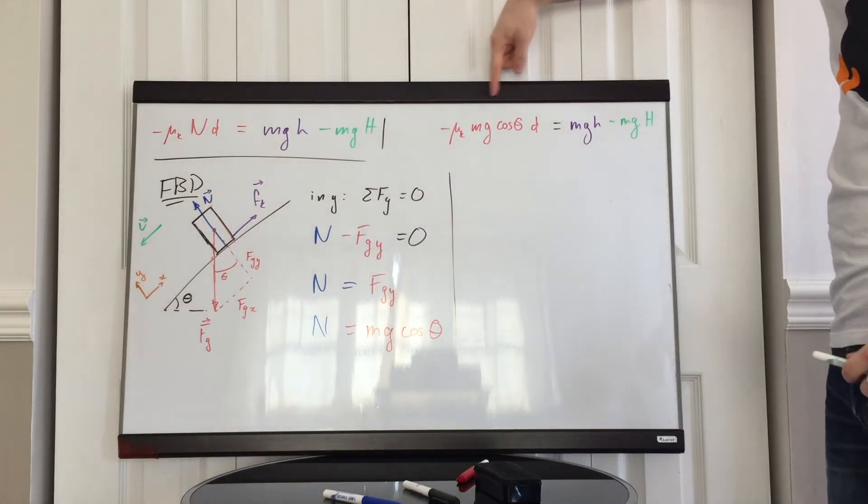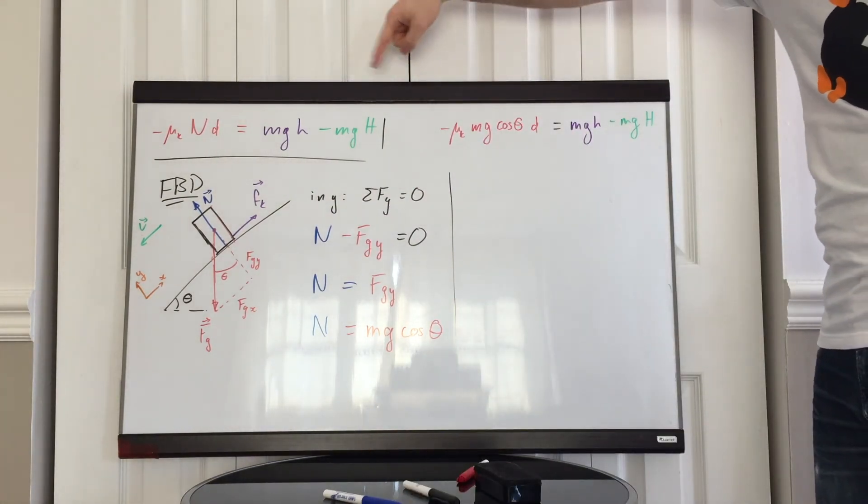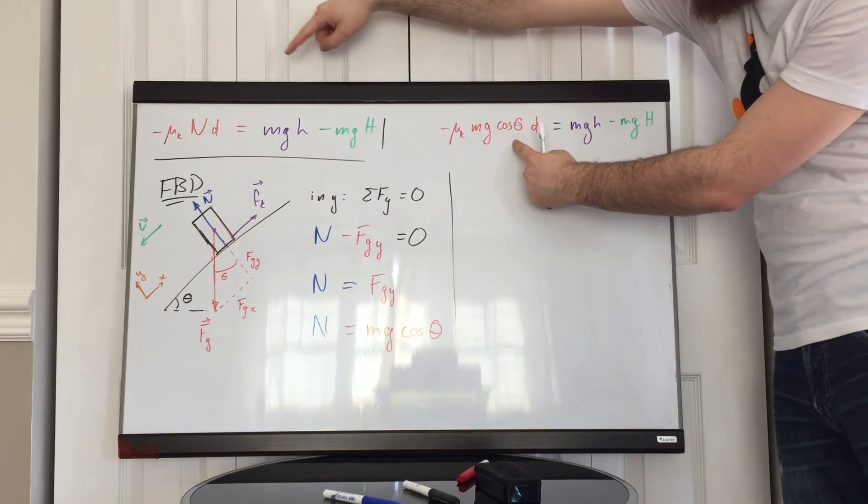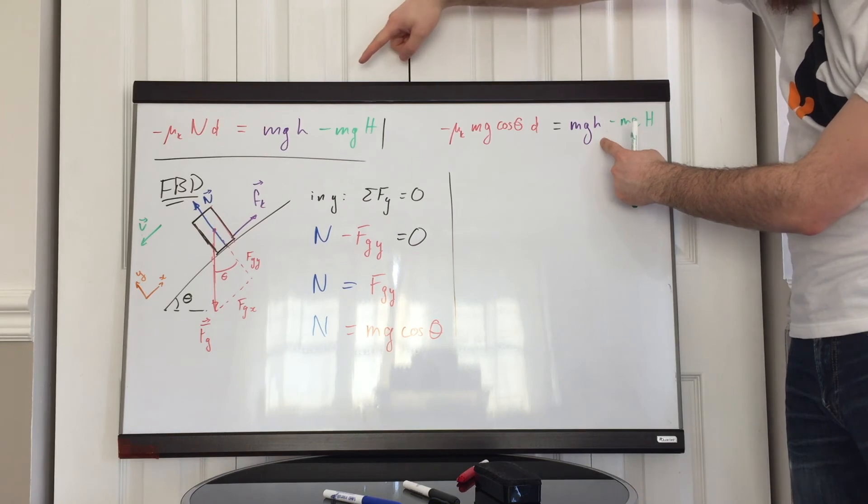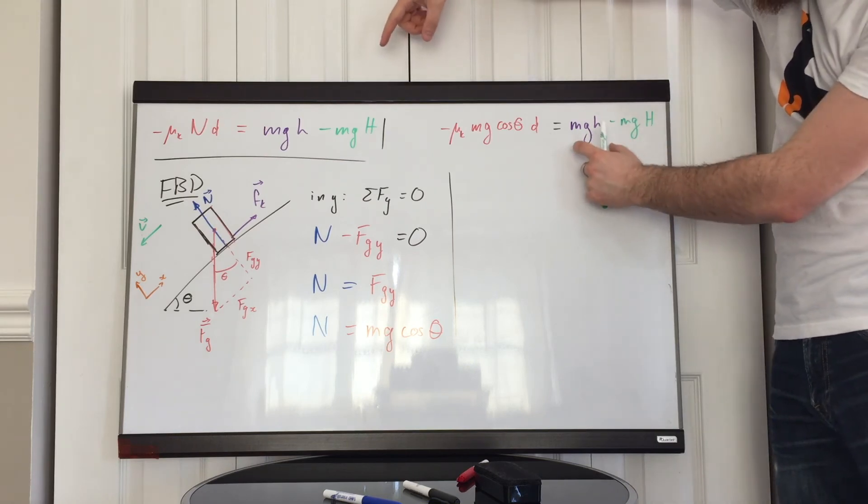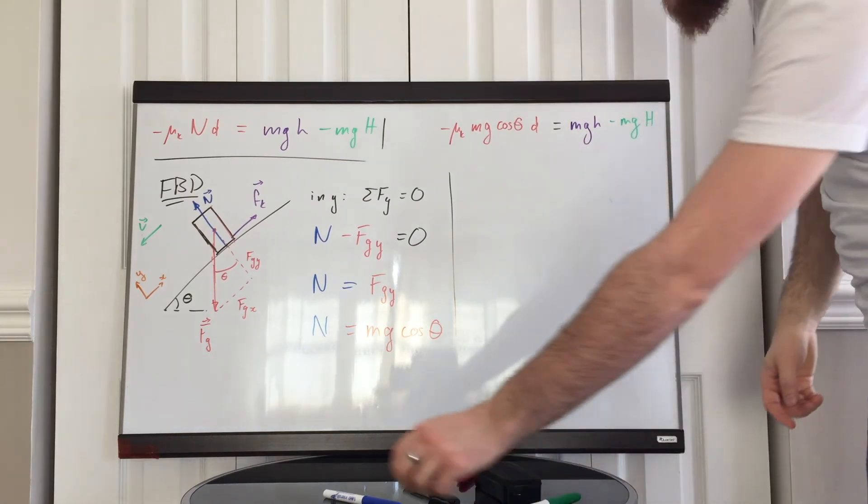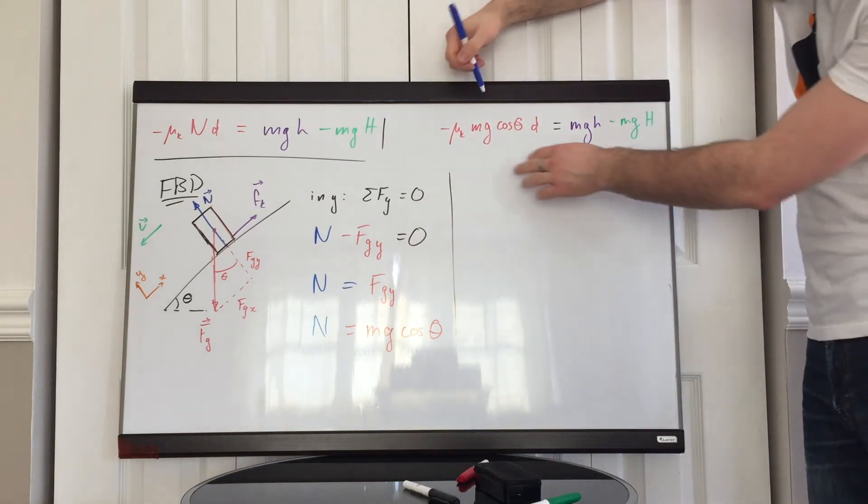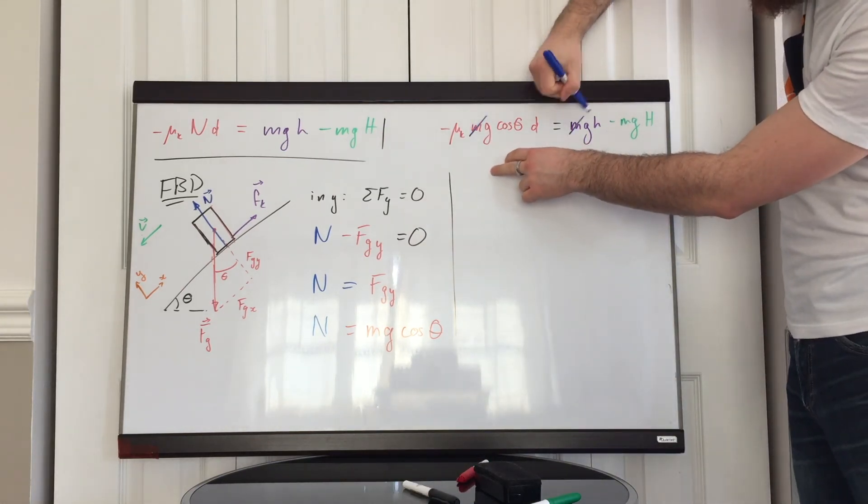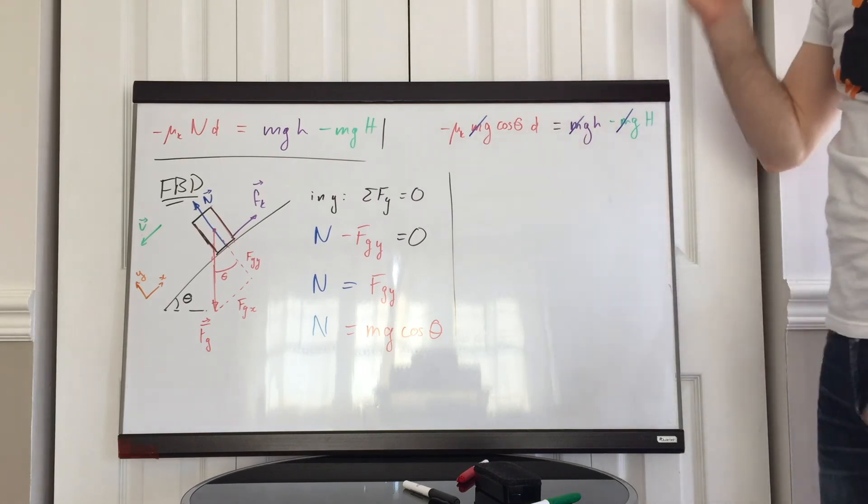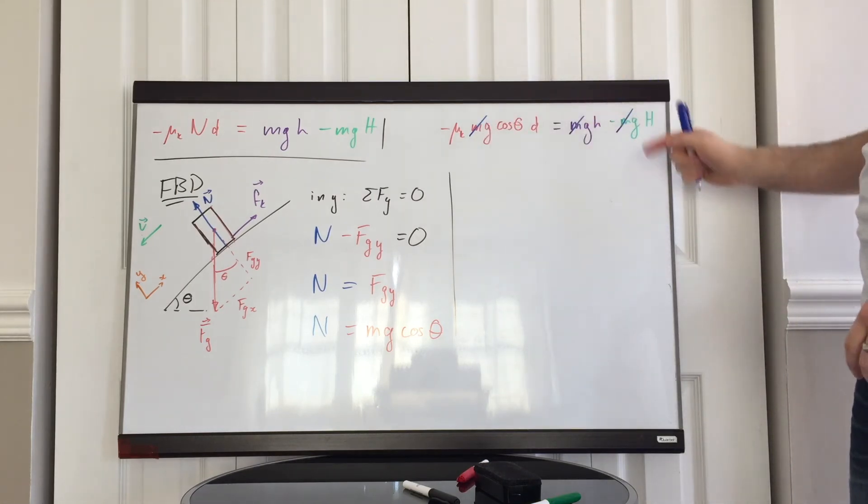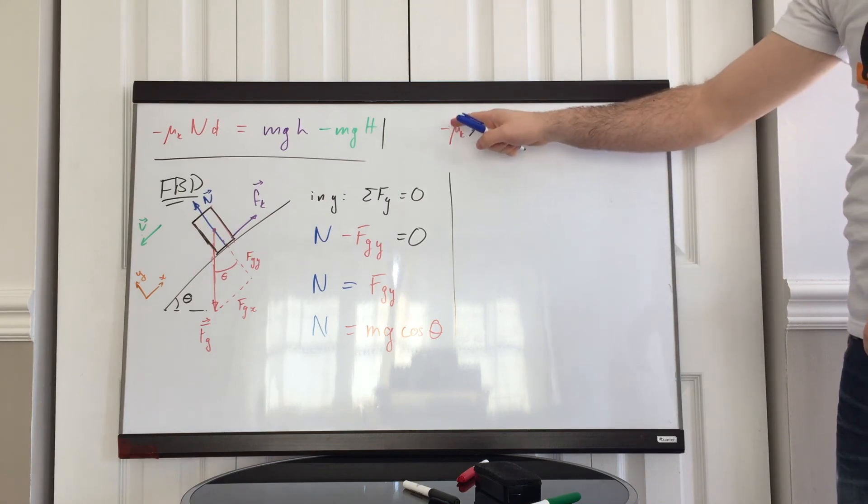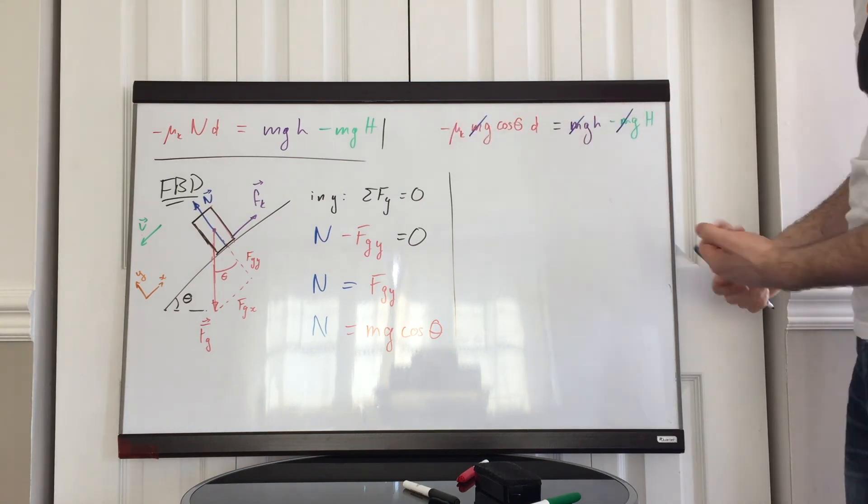Rewritten, this is the expression that we get. Negative mu k M g cosine of theta, our normal force, times d, is equal to M g small h minus M g big H, the final state minus the initial state. Once again, we can see that the mass term appears in all three terms of our equation. Mass variable appears in all three terms, so we can scrap it out. And then we can bring this negative side on the other side and flip these two.